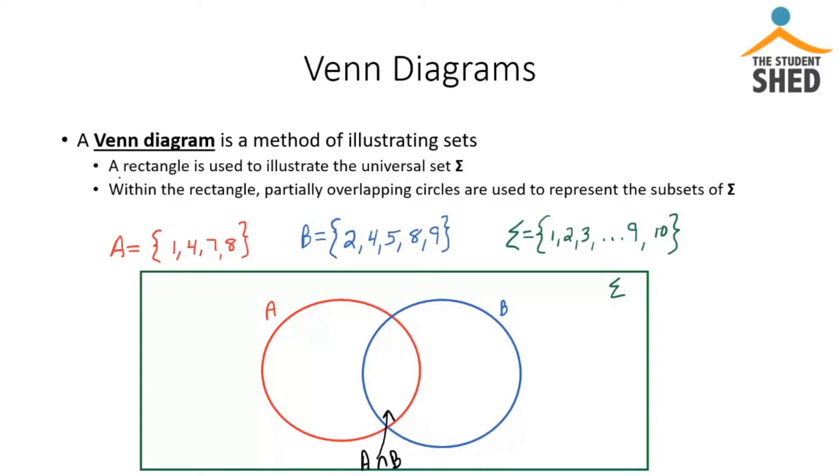So basically the way you construct it is you use a rectangle to illustrate the universal set sigma. So basically everything in sigma will be contained within this green rectangle. And then within the rectangle you have two partially overlapping circles to represent the subsets of sigma.